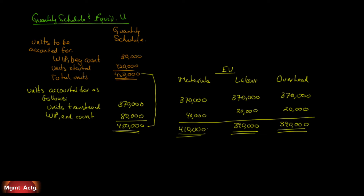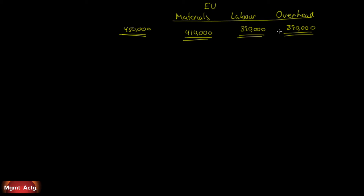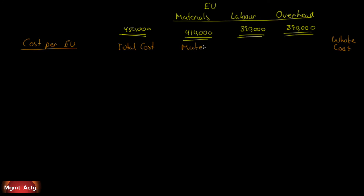I'm going to keep the equivalent units at the top of the screen as we go to complete section 2. Here we are at section 2 — I've brought forward the equivalent units, which is all we really need. Here we're going to figure out our cost per equivalent unit. We have our equivalent units; now we want to figure out our cost per equivalent unit (EU). We'll have the same three categories — material, overhead, and labor — plus total cost and what's called whole cost.